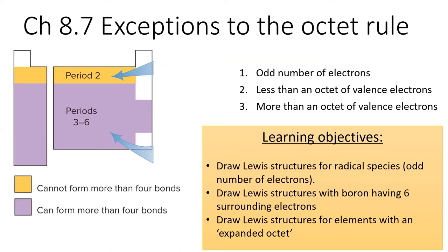Some species have odd numbers of electrons, though this is quite rare. These species are called radicals.